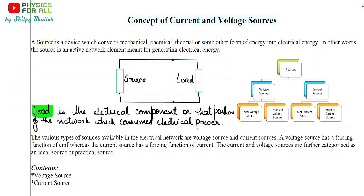By name, you can easily understand that current source is a source which would provide current, and voltage source is that source which provides voltage. Here is the definition for source: source is a device which converts mechanical, chemical, thermal or some other form of energy into electrical energy, because we make use of current and voltage sources in our electrical circuit. We want electrical energy to run our appliances. So, the word source is used for all those devices. We can also say that source is an active network element meant for generating electrical energy.